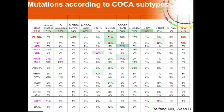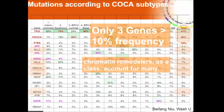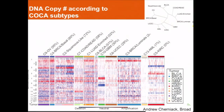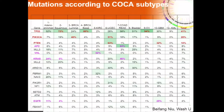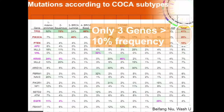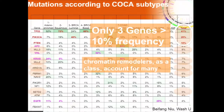Li Ding's group looked at the mutation frequencies defined by these subtypes. As expected, there are only three genes with greater than 10% frequency. But other genes were identified as well, and the chromatin remodelers, when added all up, account for plenty of the samples.